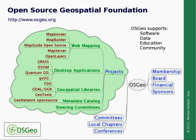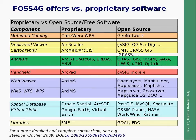What are the offers of OSGEO with respect to proprietary software? In this table, you can see on the left side the different components from metadata catalogs to dedicated viewers, cartography tools, GIS analysis, handheld and mobile web services and viewers, spatial databases, virtual globes and libraries. In the center column you find some proprietary products, and on the right side a column of open source answers. You can see that for each proprietary product there is at least one open source product available, often even several to choose from. At the page bottom, you can see a more complete and detailed comparison which has been published as a scientific article.